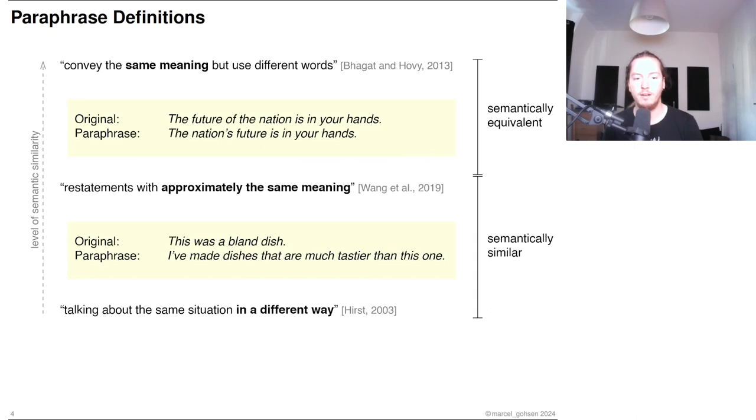Here we see two examples of semantically equivalent and semantically similar paraphrases. The future of the nation is in your hands, and the nation's future is in your hands are strictly semantically equivalent. This was a bland dish, and I've made dishes that are much tastier than this one are not semantically equivalent, but similar enough to still be considered paraphrases.